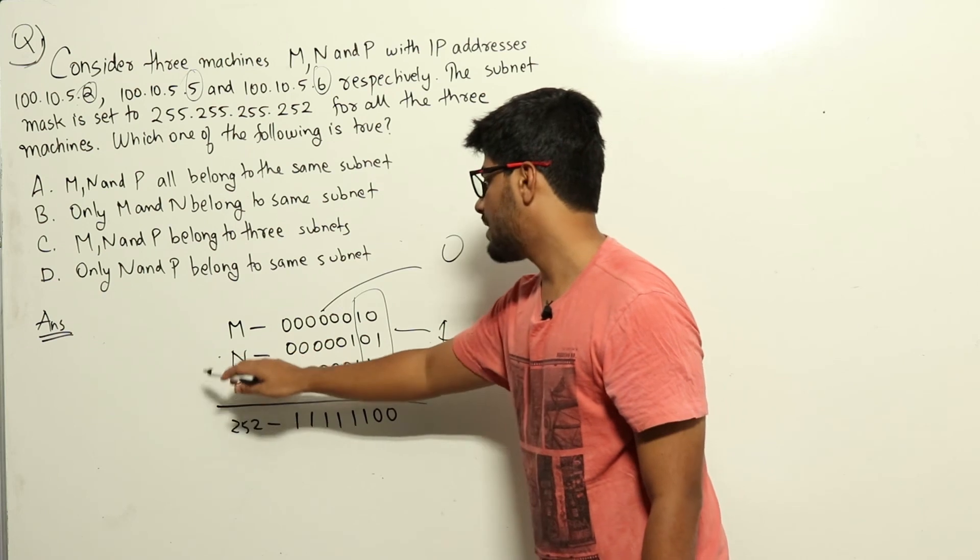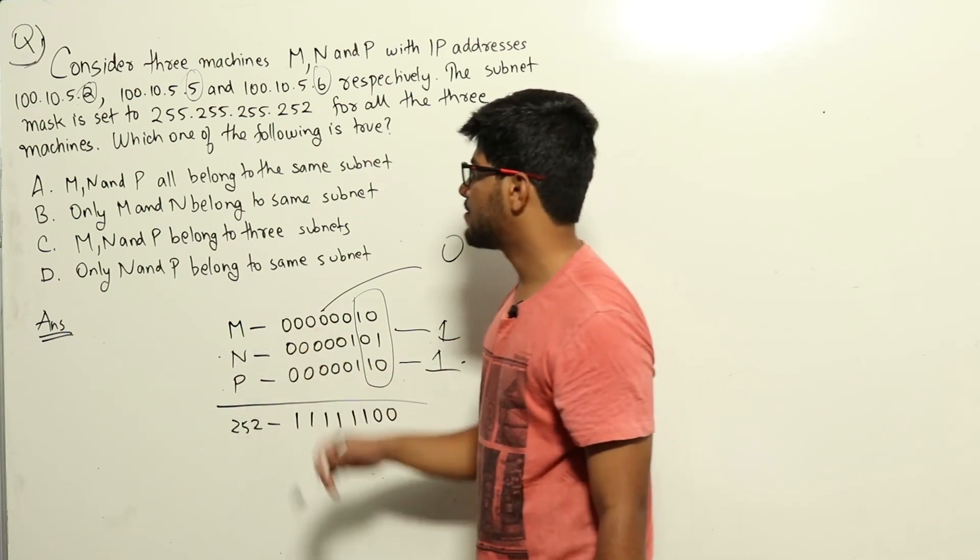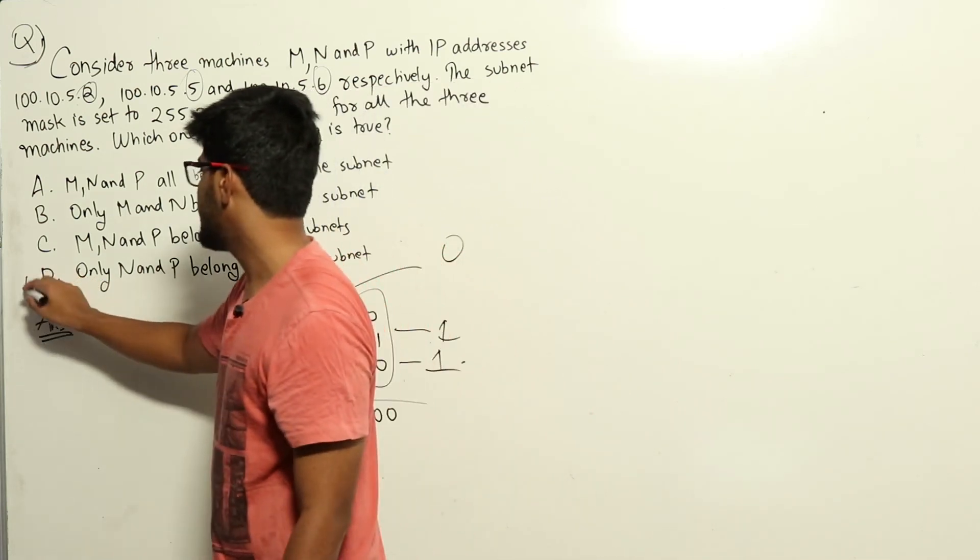As you can see, N and P belong to the same subnet, M is in a different subnet. So the answer is option D, N and P.